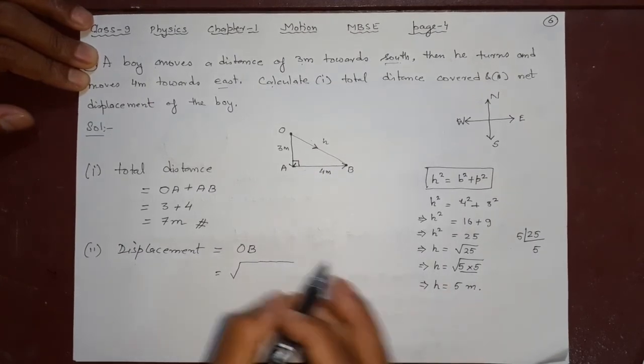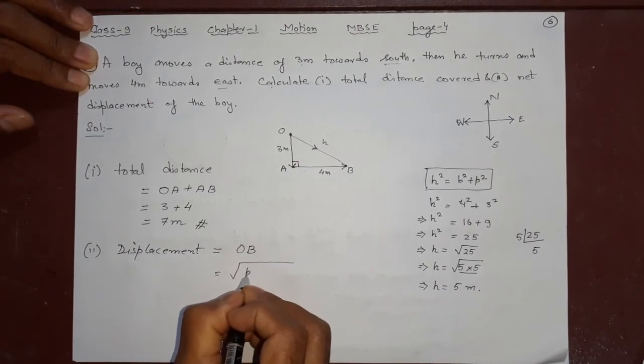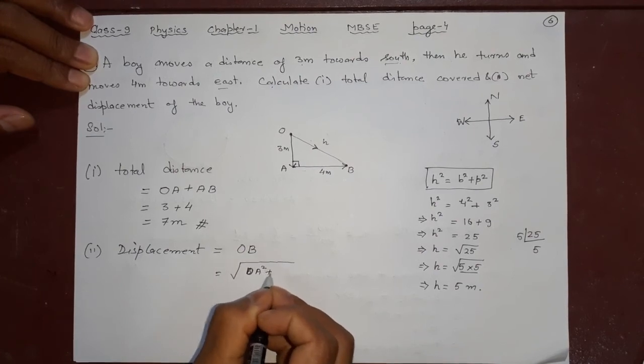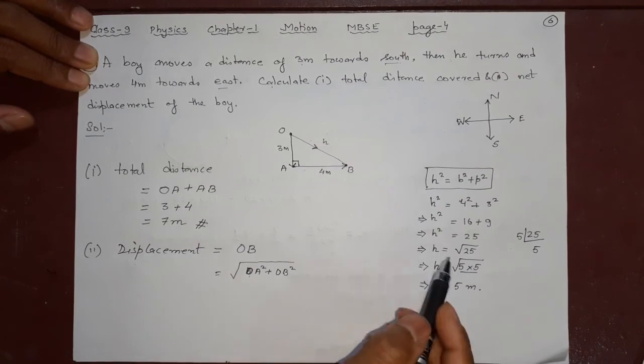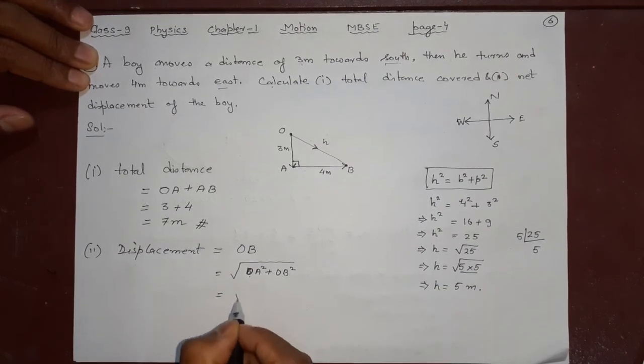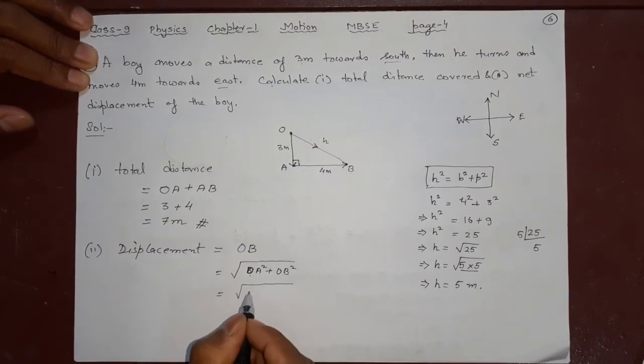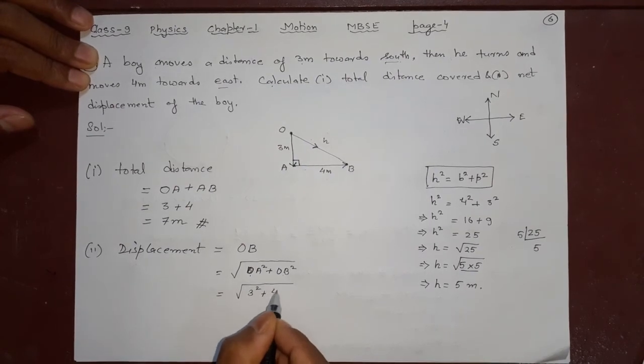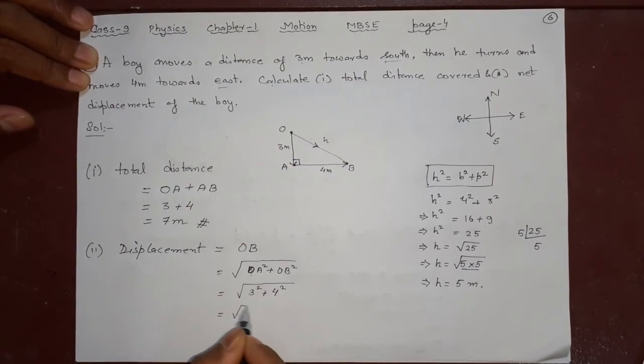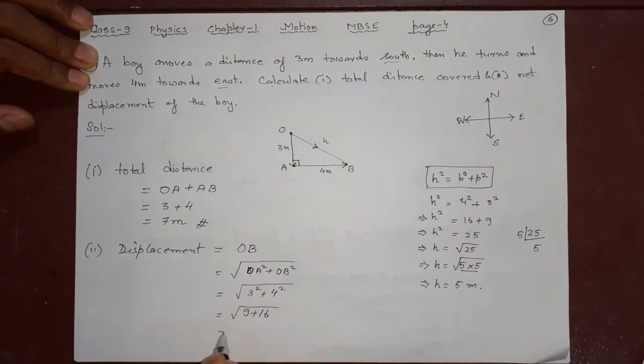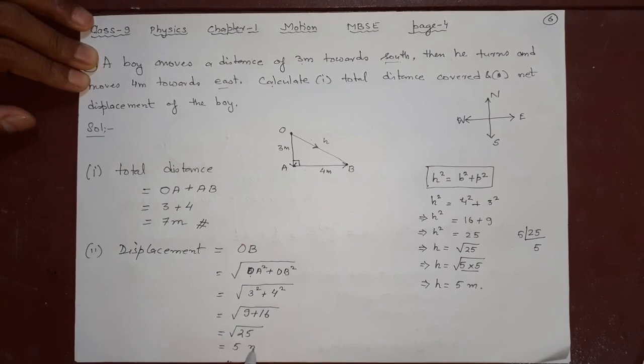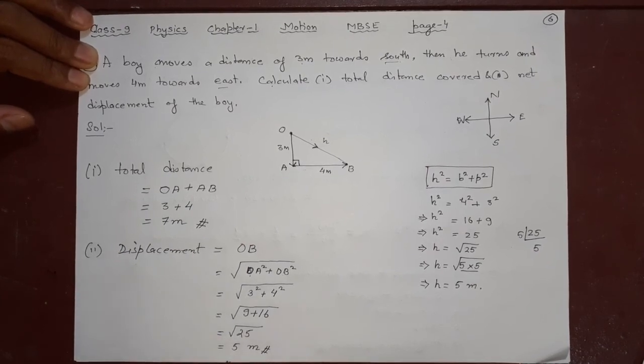So this is what I will do it here in shortcut. Square root of OA² plus AB². P² and B². What is this? 3² plus 4². What is this? 9 plus 16. What is this? 25. So this will be 5 meter. Thank you.